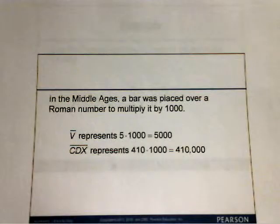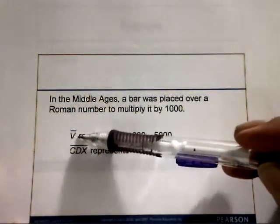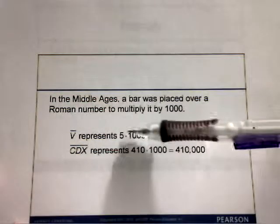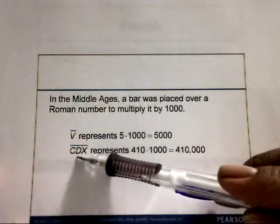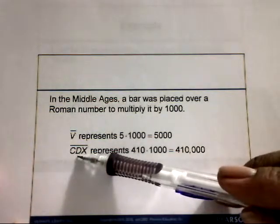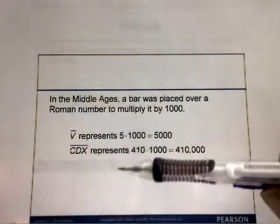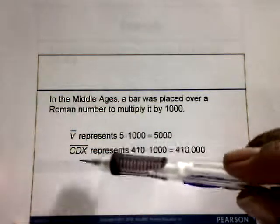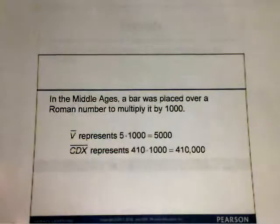In the Middle Ages, a bar placed over a Roman numeral multiplied it by 1,000. So V with a bar on top equals 5,000. For CDX with a bar on top: CD is 400 and X is 10, giving 410; multiply by 1,000 to get 410,000.